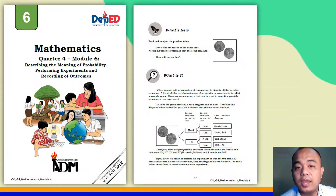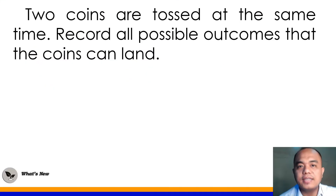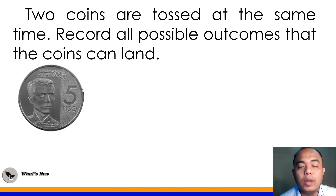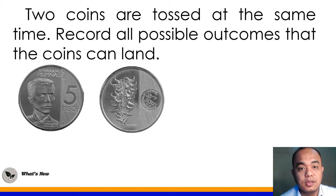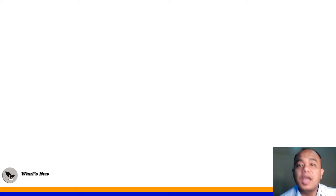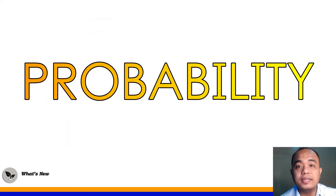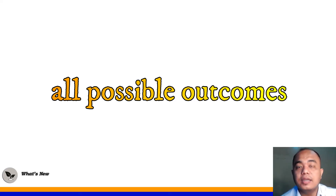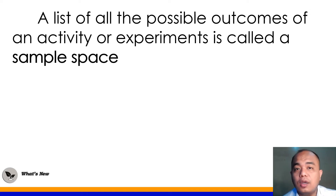Let's discuss the What's New and the What Is It part of your module. Let's analyze this problem first: Two coins are tossed at the same time. Record all outcomes that the coin can land. This time, dalawa na ang coin na ginamit natin in tossing. What is asked here is to record down all the possible outcomes that the coin can land. In dealing with probability, it is very important to identify all the possible outcomes. A list of all possible outcomes of an activity or experiment is called sample space.